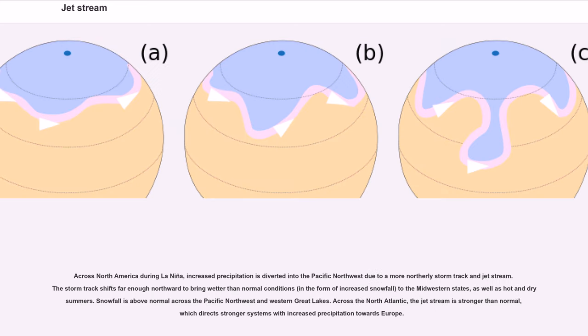Across North America during La Niña, increased precipitation is diverted into the Pacific Northwest due to a more northerly storm track and jet stream. The storm track shifts far enough northward to bring wetter-than-normal conditions, in the form of increased snowfall, to the Midwestern states, as well as hot and dry summers. Snowfall is above normal across the Pacific Northwest and western Great Lakes. Across the North Atlantic, the jet stream is stronger than normal, which directs stronger systems with increased precipitation towards Europe.